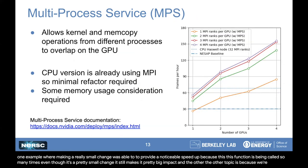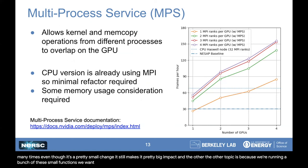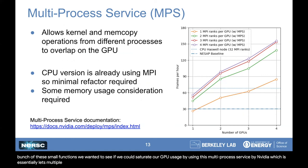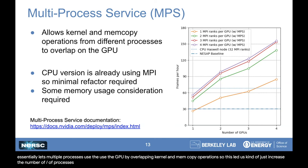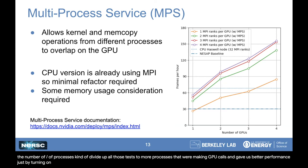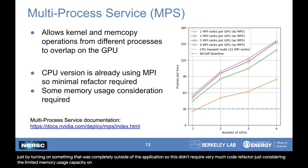Because we're running a bunch of these small functions, we wanted to see if we could saturate our GPU usage by using the NVIDIA Multi-Process Service, which essentially lets multiple processes use the GPU by overlapping kernel and memory copy operations. This let us increase the number of processes, divide up all those tasks to more processes making GPU calls, and gave us better performance just by turning on something completely outside of the application. This didn't require very much code refactoring — just considering the limited memory capacity on the GPU to make sure we weren't using too much memory.